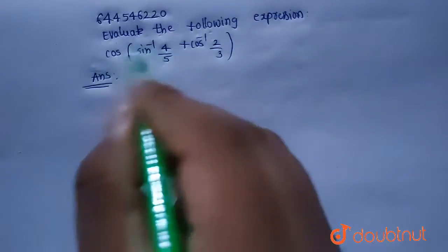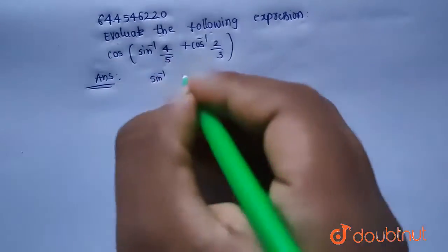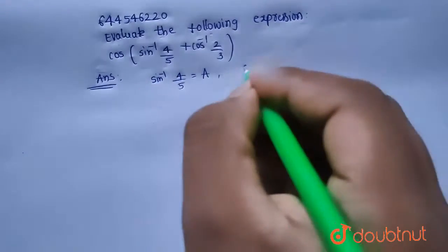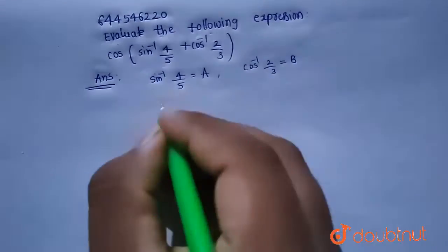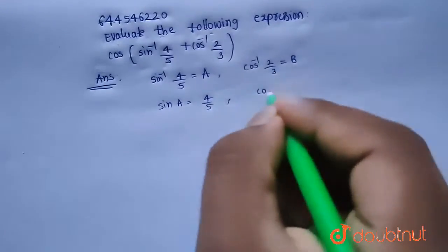Now in this question we have to find the value of the given expression. So let's assume sin inverse 4 by 5 as a and cos inverse 2 by 3 as b. Now from this, sin a will be equals to 4 by 5 and cos b will be equals to 2 by 3.